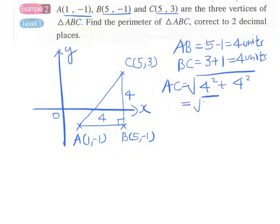This will be the root of 32, which is 5.66 units. Remember, don't forget the perimeter.